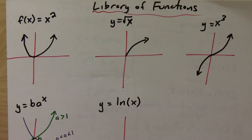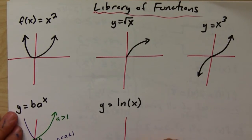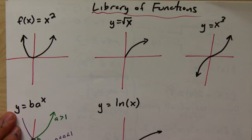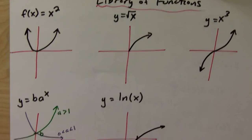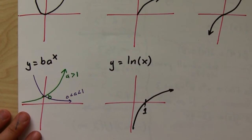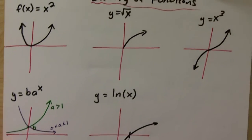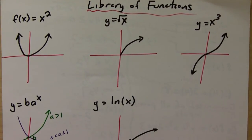The natural log function looks like this and it crosses over at one. So that's your library of functions. Now let's talk a little bit about inverses, just visually.